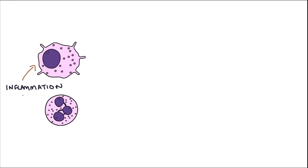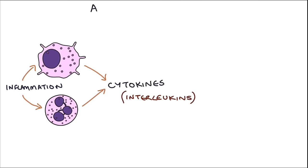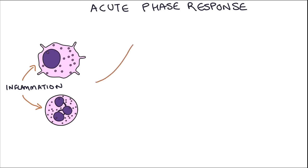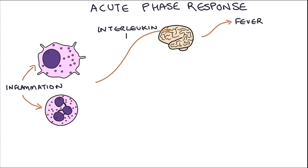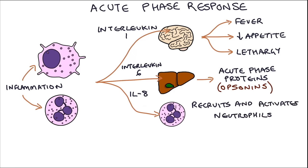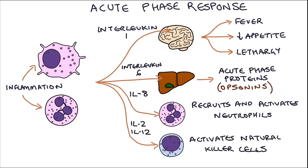Inflammation itself actually stimulates macrophages and neutrophils to secrete more cytokines, notably chemicals called interleukins. This is known as the acute phase response and it leads to a more systemic inflammatory response. This involves sending cytokines — specifically interleukin 1 — to the brain to produce a fever, leading to high temperatures that are poorly tolerated by many pathogens, and causing reduced appetite and lethargy so that the person conserves more energy to fight the infection. It also involves sending interleukin 6 to the liver to produce acute phase proteins that act as opsonins. Additionally, interleukin 8 is released that recruits and activates more neutrophils. Interleukin 2 and 12 activate natural killer cells, and tumor necrosis factor alpha is released that does all of these effects by itself.